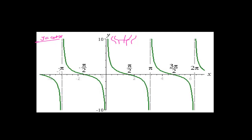Now the derivative of cot x at any point — suppose you take any point here — simply means the slope of the tangent at that particular point. At that particular point you are taking the slope, and the slope of that tangent is the derivative of cot x at that point. The derivative tells how the function of cot x is changing — how the change in y is taking place with respect to the change in x.